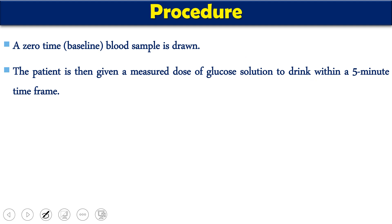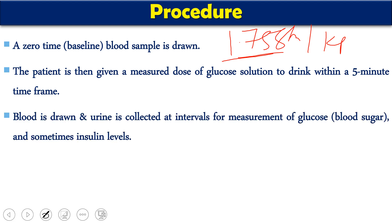Normally, we are going to take a zero-hour baseline blood sample called the fasting blood sample — after roughly eight hours of fasting. Then the patient is given a measured dose of glucose solution to drink within a five-minute time frame. The amount of glucose to be given is decided by body weight. For the most common 75-gram glucose test, we calculate 1.75 grams per kg body weight, with a maximum of 75 grams. For example, if a person weighs 75 kg, you do not multiply 75 by 1.75 as that would exceed 100 grams. For children with lower body weight, you must use this formula to calculate the appropriate dose.